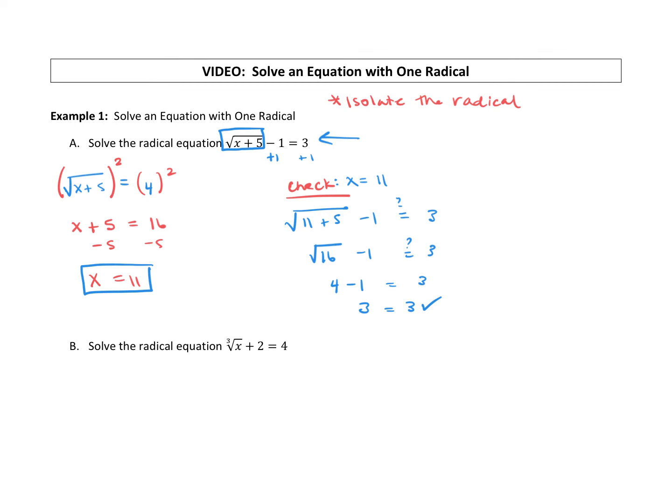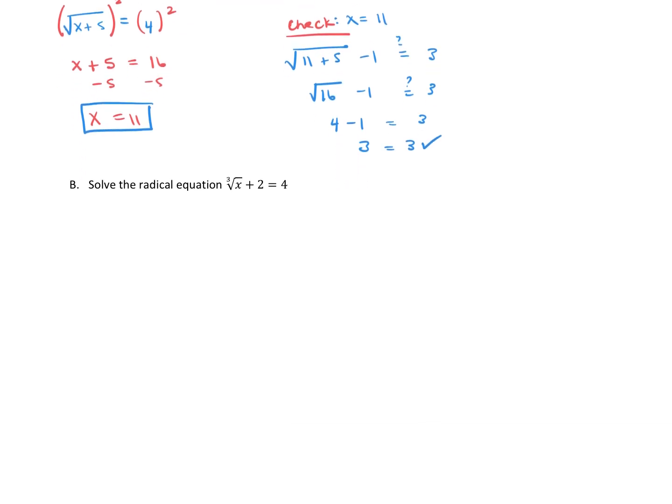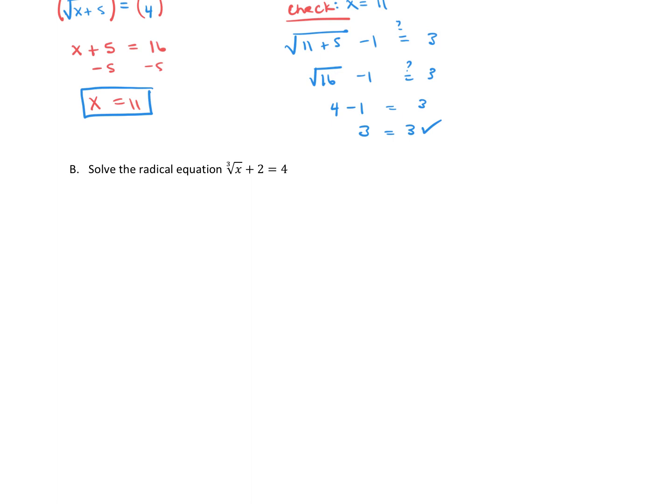It worked out when we plugged it in and checked our answer. Okay, so let's try another one. Solve the radical equation. This is a cube root of x plus two is equal to four. So again, whatever the radical is, you're going to isolate that. So we're going to start by subtracting two from both sides. Carry down, we have the cube root of x equals four minus two is two.